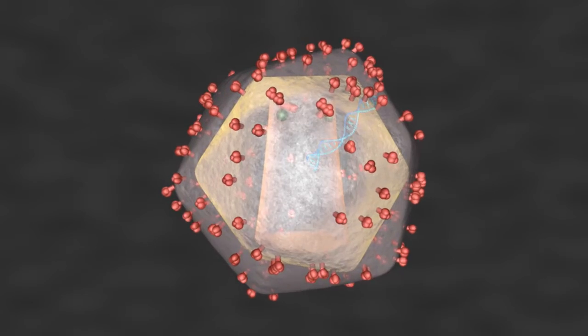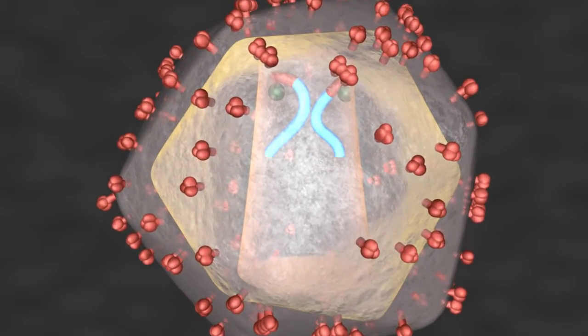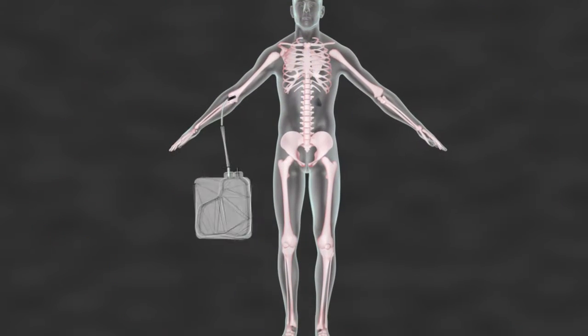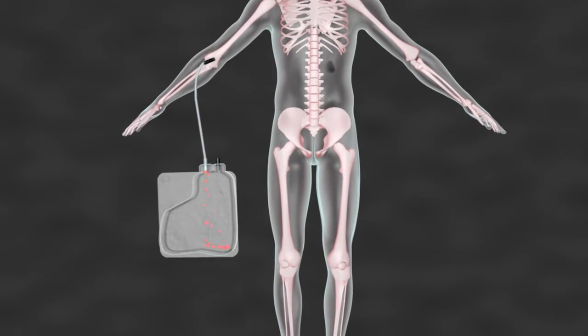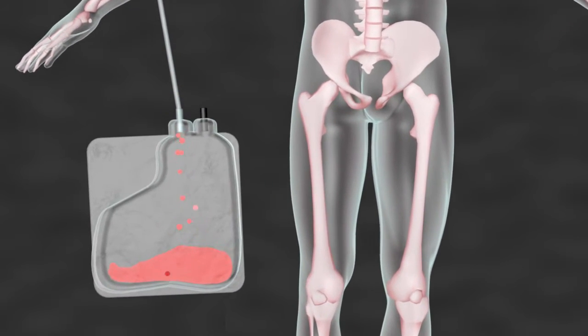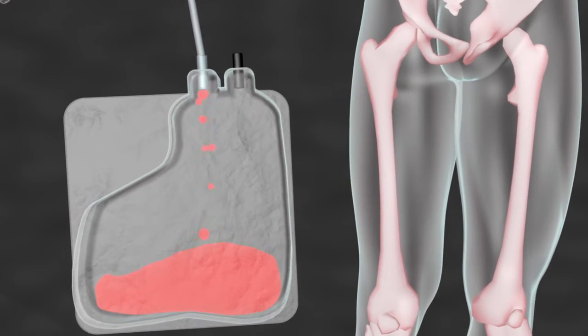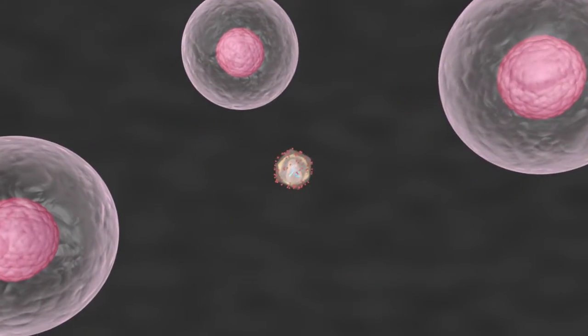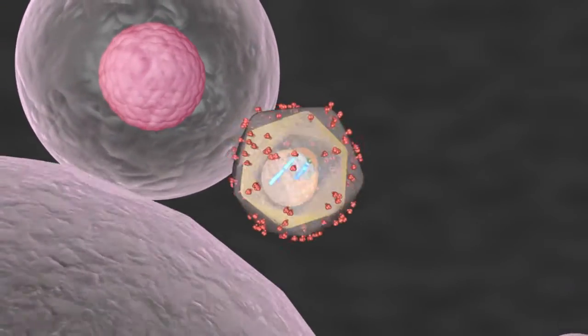Patient's hematopoietic stem cells are moved from the bone marrow into the bloodstream and harvested. Within special bags containing the modified viral vectors, the viral vector binds the hematopoietic stem cell membrane.